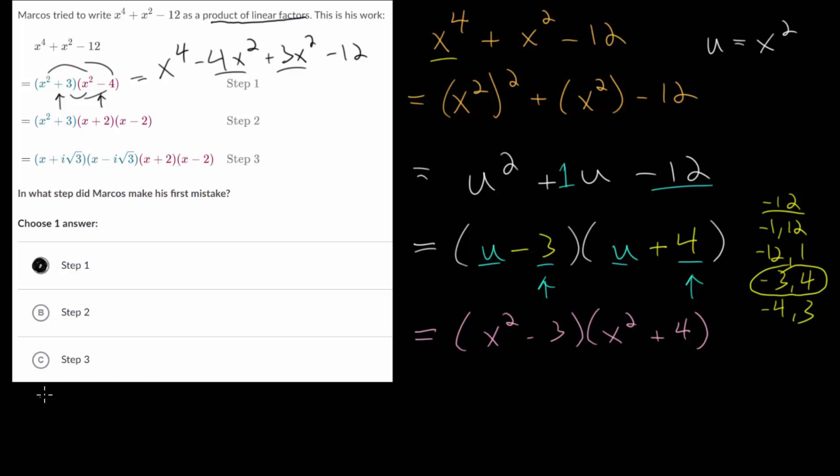So remember the formula for a difference of squares. If we have a squared minus b squared, we can factor this as a product of two binomials, where we have the first term minus the second term, ignoring the squares, and then the first term plus the second term.